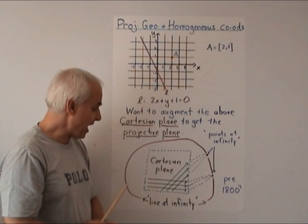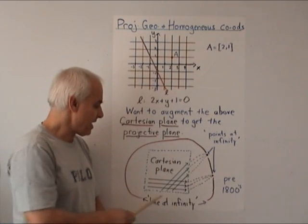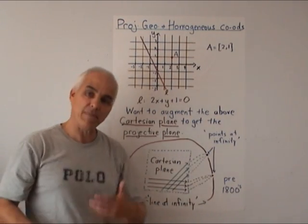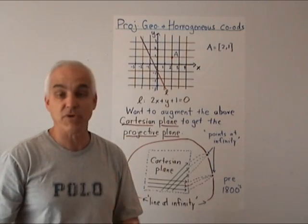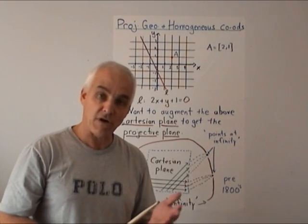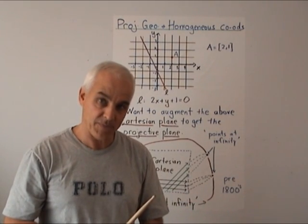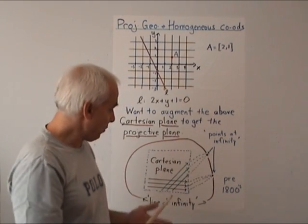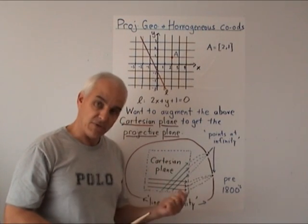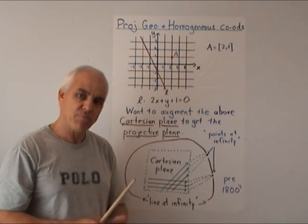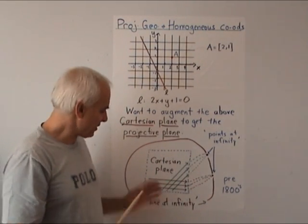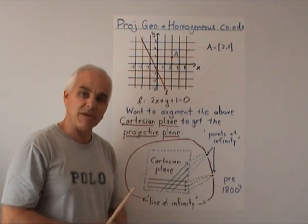This collection of points—the new points that we're adding at infinity—we declare that to be a new line, the so-called line at infinity. This was the picture that mathematicians had of the projective plane for a few hundred years from the 1600s up to the early 1800s.